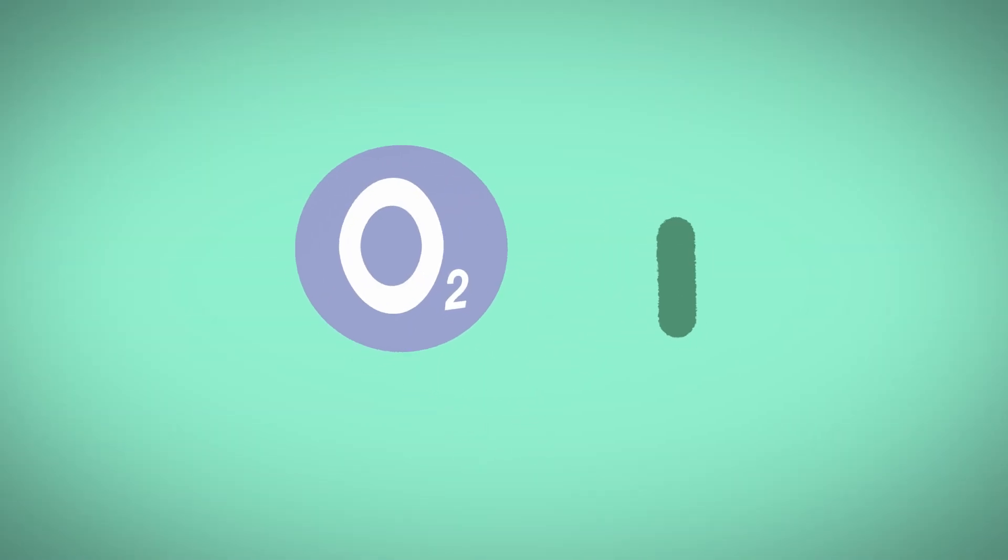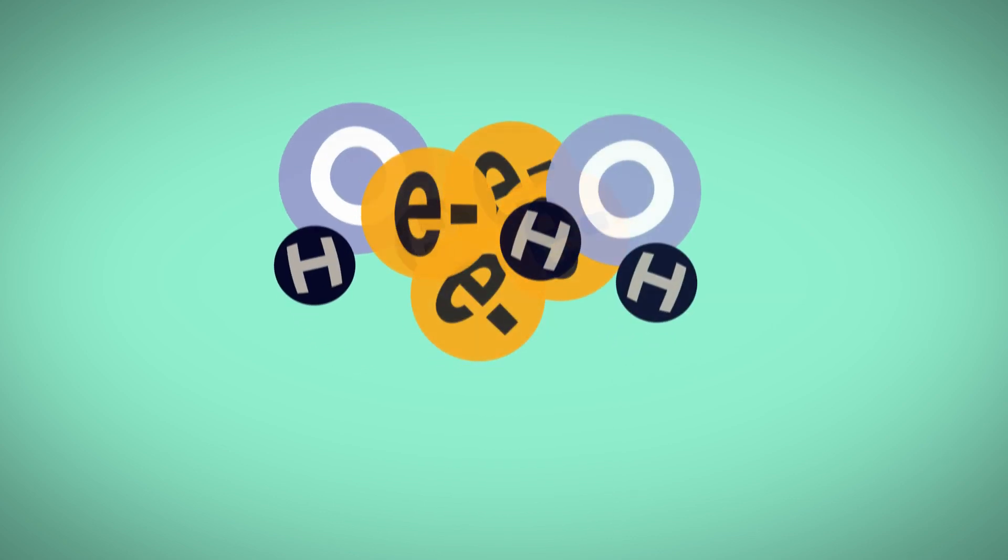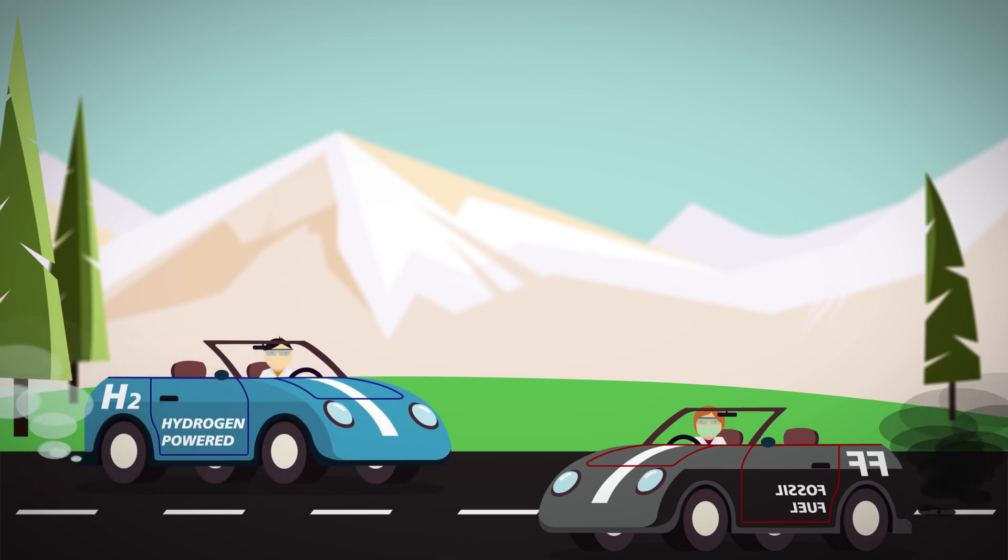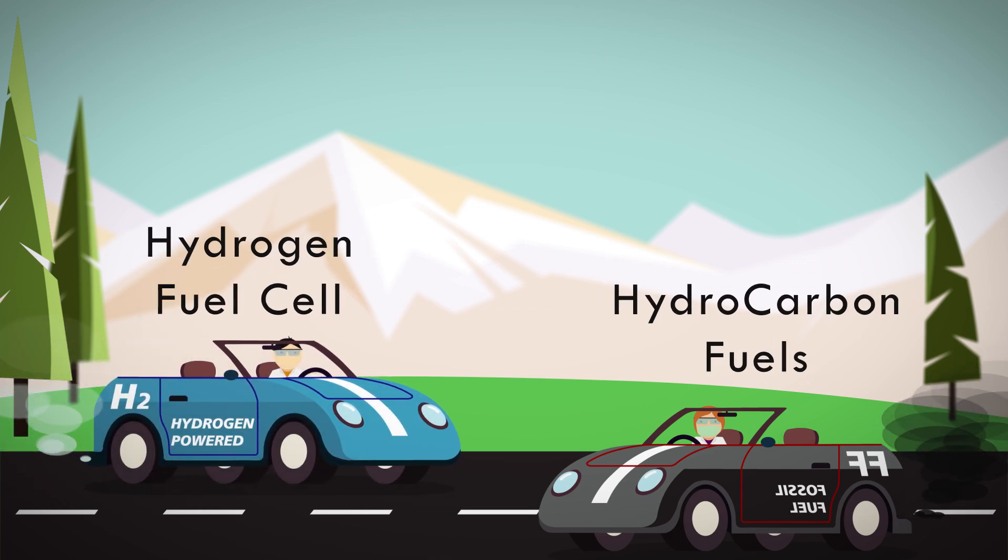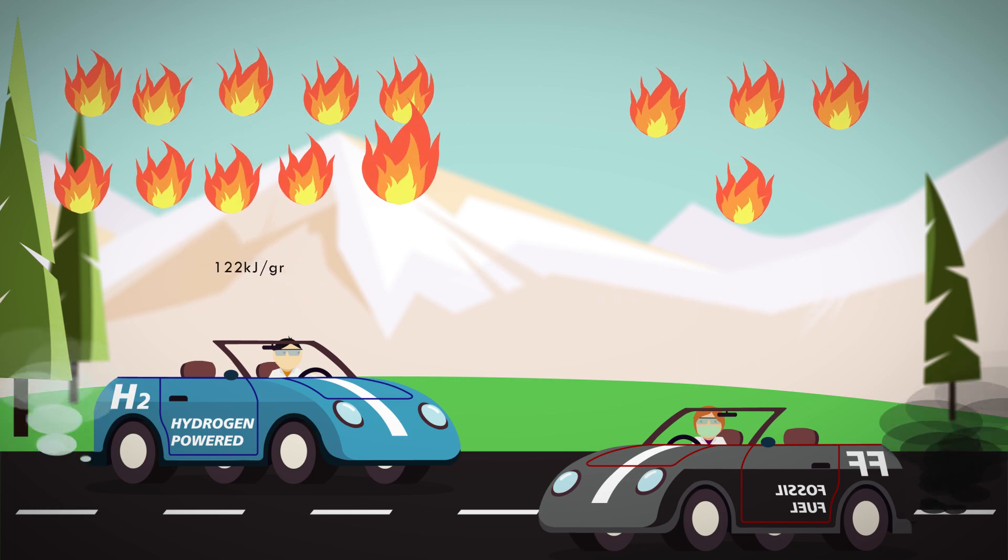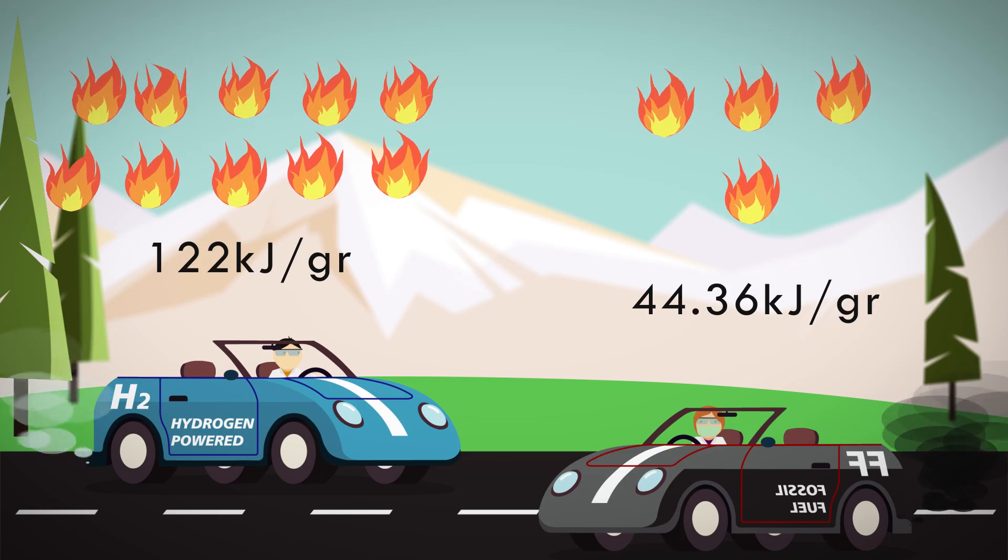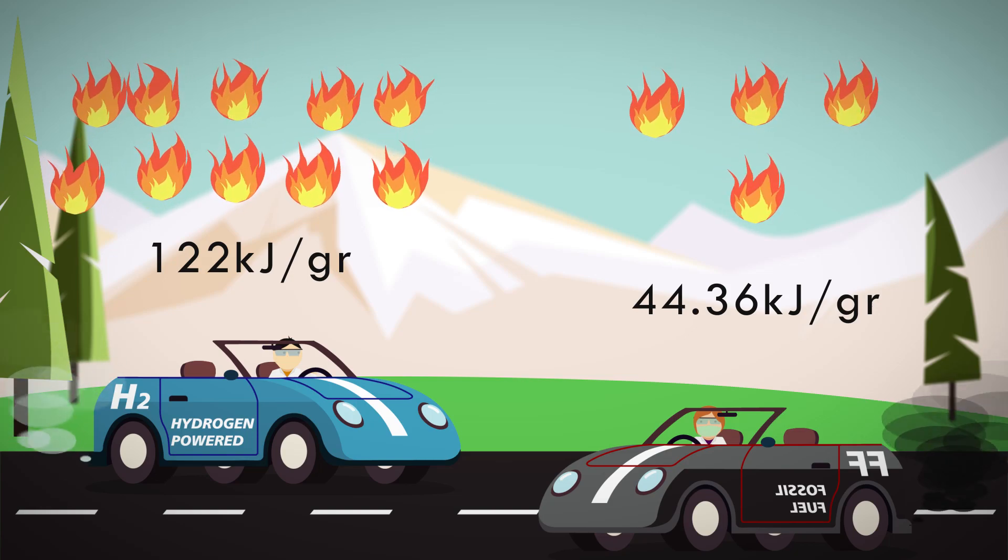Then, what is hydrogen fuel cell? Hydrogen fuel cells use chemical reactions between oxygen and hydrogen to produce electrical energy that will drive the motor in your car. Compared to combustion technology with hydrocarbon fuels, hydrogen fuel cells can produce energy per unit mass of 122 kJ per gram or 2.75 times greater.